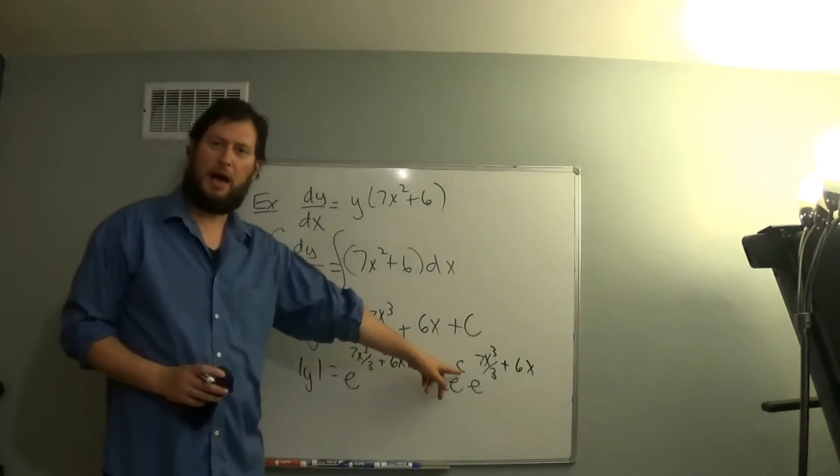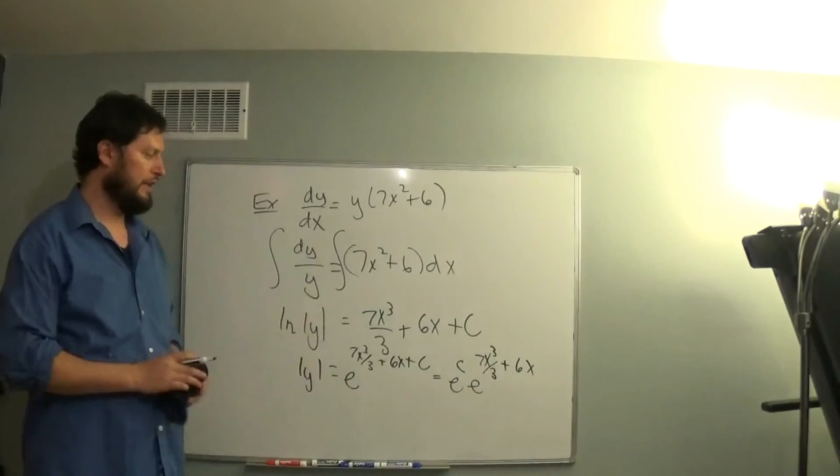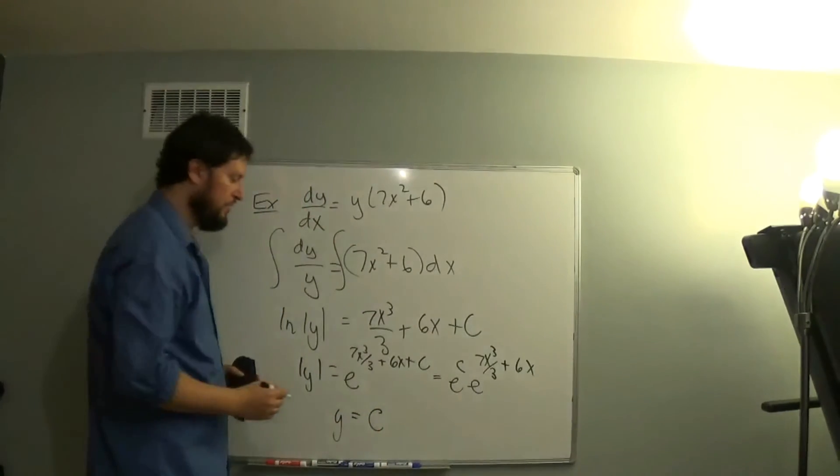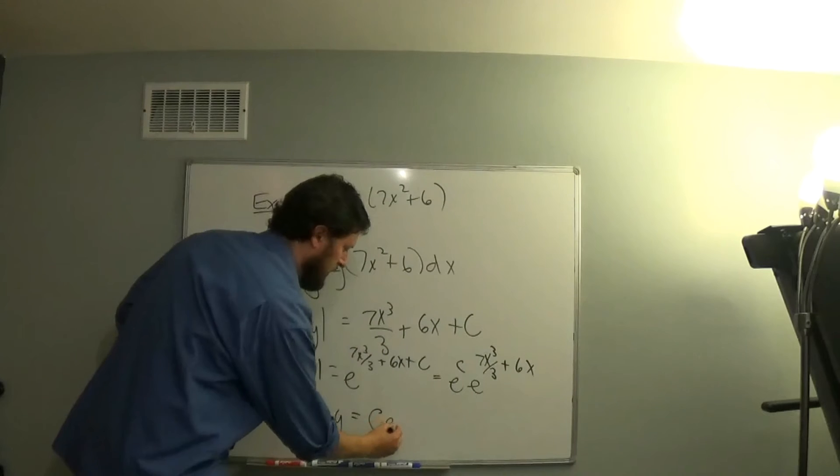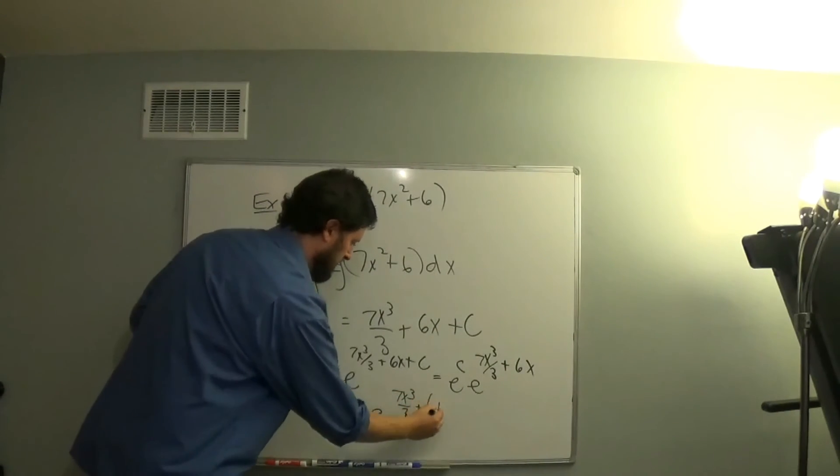But e to the c is a positive number. If we remove the absolute value, we allow negatives as well. So by removing the absolute value, this just becomes any real number, a constant of integration c, times e to the 7x cubed over 3 plus 6x.